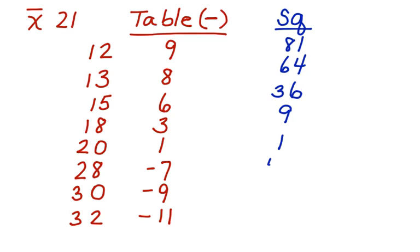Negative 7 squared is 49, negative 9 squared is 81, and negative 11 squared is 121.